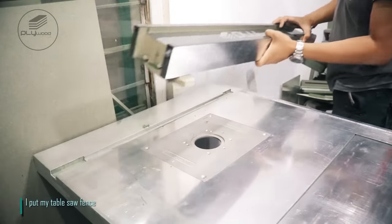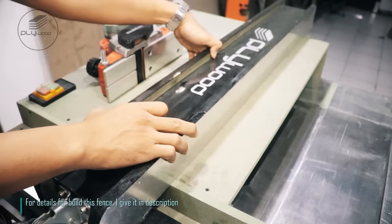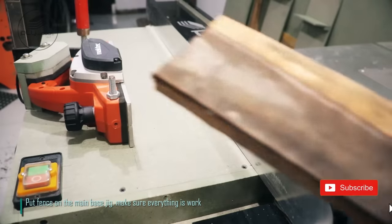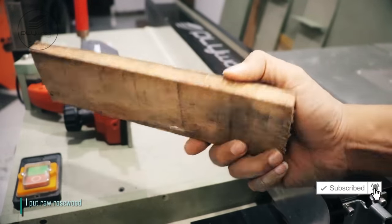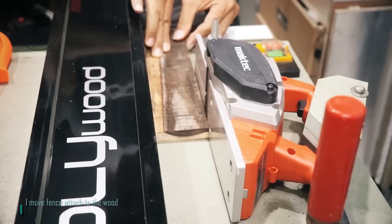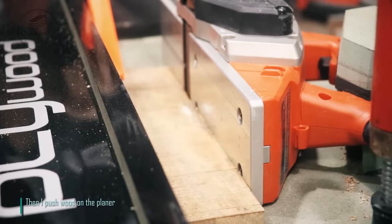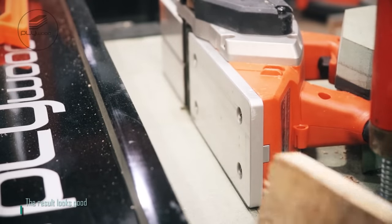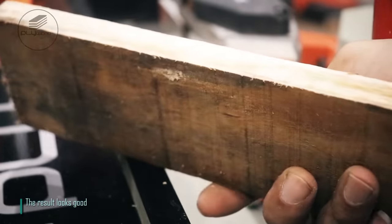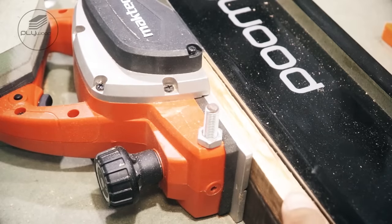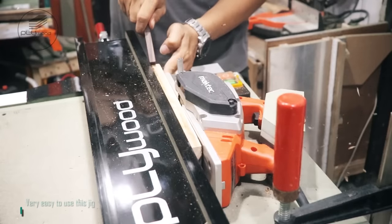I put my table saw fence. For details to build this fence, I give it in description. Put fence on the main base jig, make sure everything is work. I put Roro's wood. I move fence attached to the wood. Then I push wood on the planer. The result looks good. Now I try to planer the rosewood surface. Very easy to use this jig.